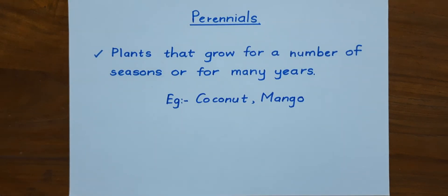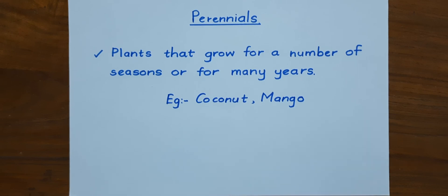The last type is perennials. They are the plants that grow for a number of seasons or for many years. Examples of perennials are coconut and mango.